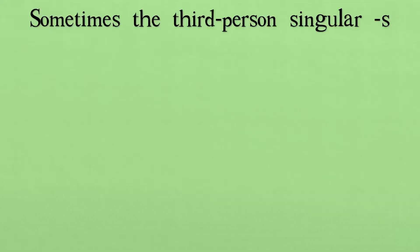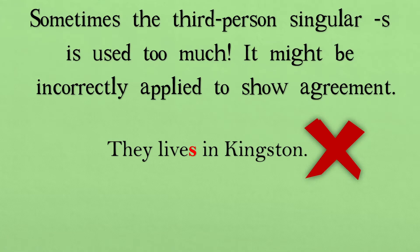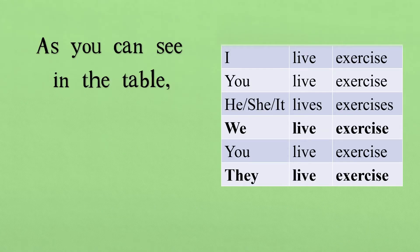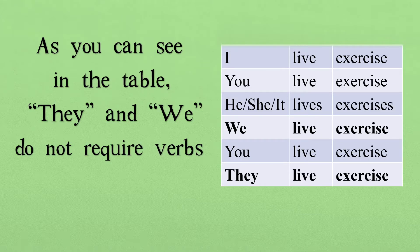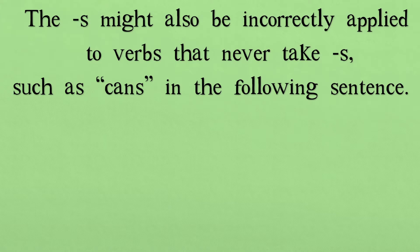Sometimes the third person singular S is used too much. It might be incorrectly applied to show agreement. As you can see in the table, 'they' and 'we' do not require verbs that take an S. The S might also be incorrectly applied to verbs that never take S, such as 'cans', in the following sentence.